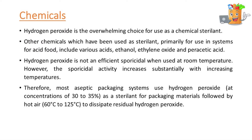Hydrogen peroxide is the overwhelming choice for use as a chemical sterilant. Other chemicals which have been used as sterilants, primarily for use in systems for acid food, include various acids, ethanol, ethylene oxide and parasitic acid. Hydrogen peroxide is not an efficient sporicidal when used at room temperature. However, the sporicidal activity increases substantially with increasing temperatures. Therefore, most aseptic packaging systems use hydrogen peroxide at concentrations of 30–35% as a sterilant for packaging materials, followed by hot air to dissipate residual hydrogen peroxide.